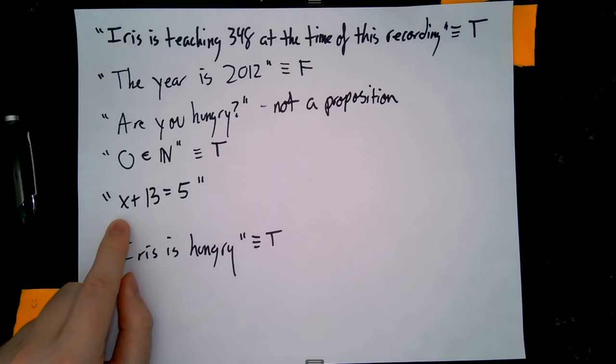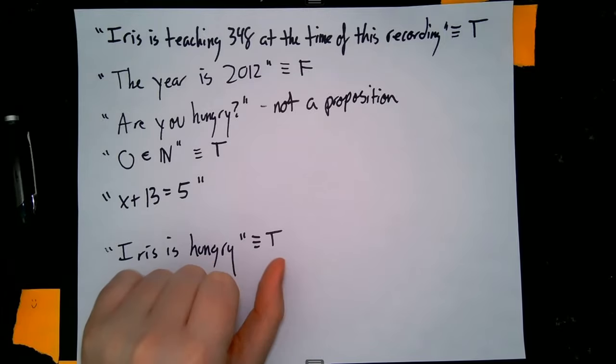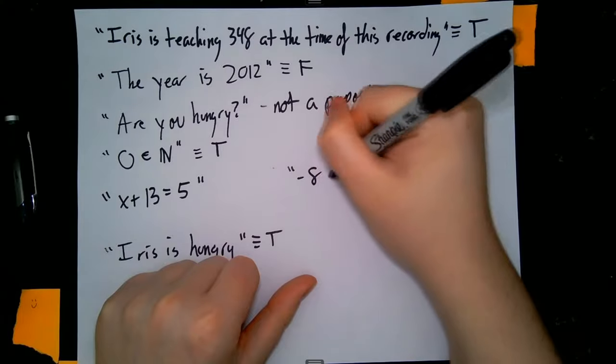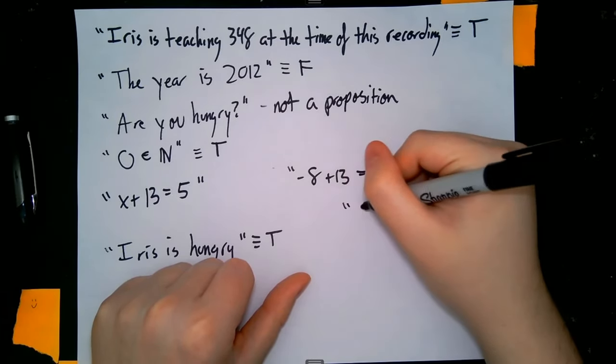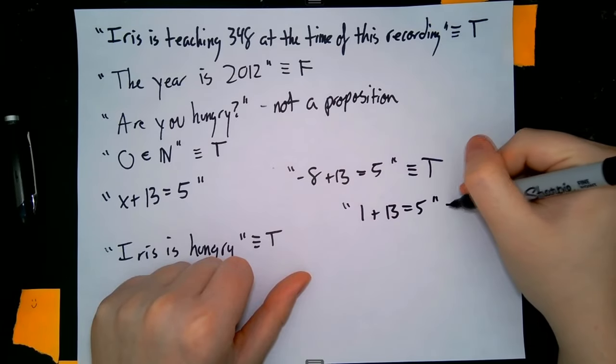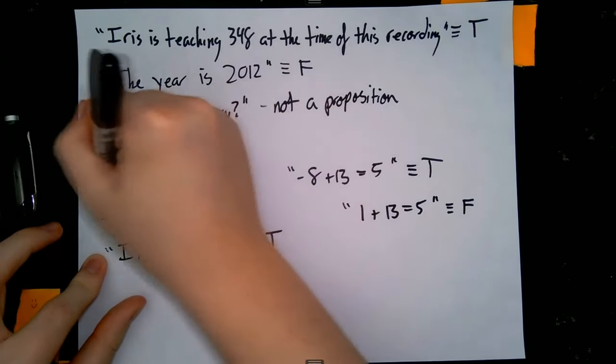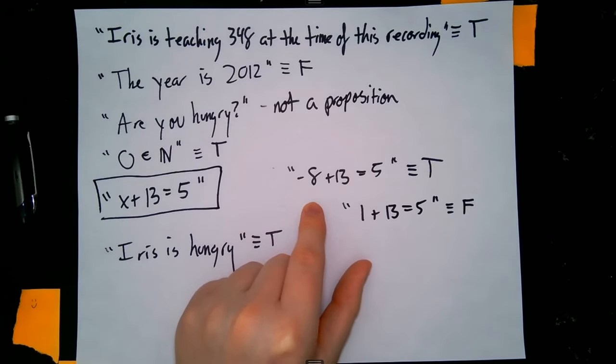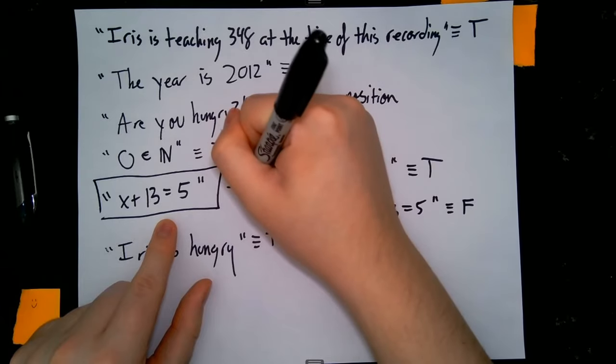Now, "x plus 13 equals five." We have this x here, and given that we've taken a whole bunch of algebra, we can probably assume that this x is meant to have some sort of numerical value. We could certainly give values of x that satisfy x plus 13 equals five. For example, negative eight plus 13 equals five. This is in fact a true statement. We could also say something like one plus 13 equals five. That is in fact a false statement. But when we're talking about propositions, we are just looking at the statement by itself in isolation. We're not worrying about plugging in anything to the statement to try to make it true or false. Right here, we are just looking at the statement, and by itself, this statement doesn't tell us anything that lets us know if it is true or false. So we say not a proposition.